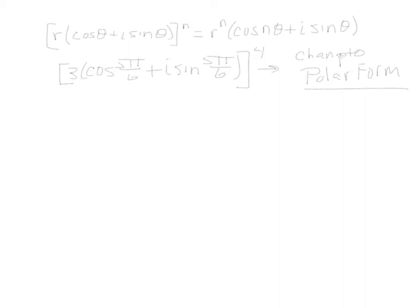I have De Moivre's theorem written up here at the very top. Our problem is given here already written in polar form, but we want to raise this to the fourth power. Let's apply De Moivre's theorem. The 3 out in front we raise to the fourth power. We multiply by cosine, and we take the argument 5π/6 and multiply that by 4. So that gives us cosine 4 times 5π/6, plus I sine 4 times 5π/6.